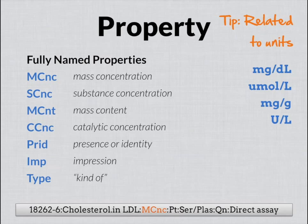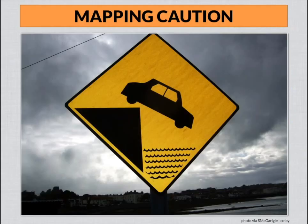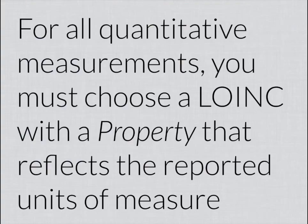There are other kinds of properties that are less physically based. When we call something an impression or an overall interpretation, that's a kind of property. When doing categorizations, you might call it a type — saying it's a kind of this or kind of that. These are some examples of properties, and the goal is to separate out things based on the attributes you're measuring. Big caution: pay attention to property; don't just ignore it. If you have a quantitative measurement, you need to pay attention to your units and choose a LOINC code that corresponds with a relevant property.